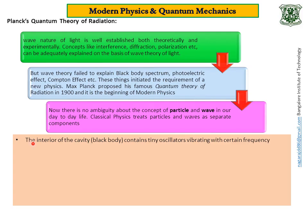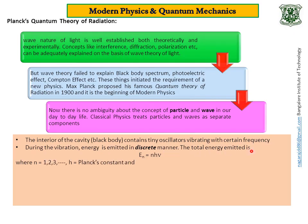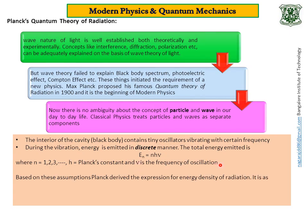The first assumption, the interior of the black body contains tiny oscillators vibrating with certain frequency. Second assumption, during the vibration, energy is emitted in discrete manner. The total energy emitted is En equals n into h nu. Where n is an integer, h is Planck's constant, nu is frequency of oscillations.